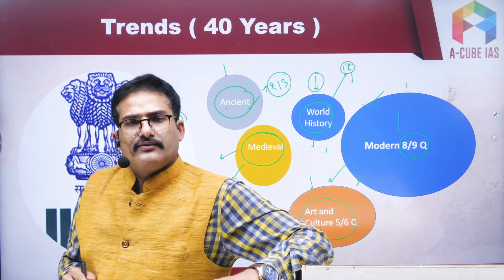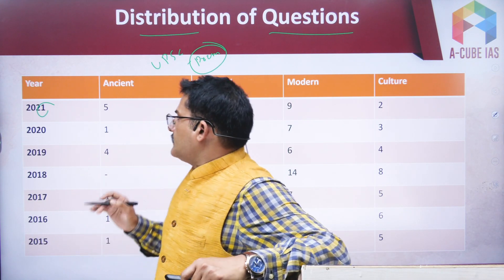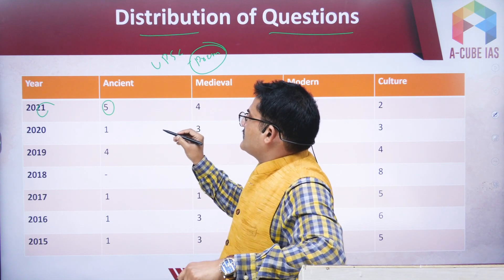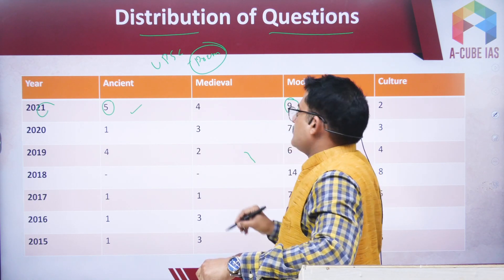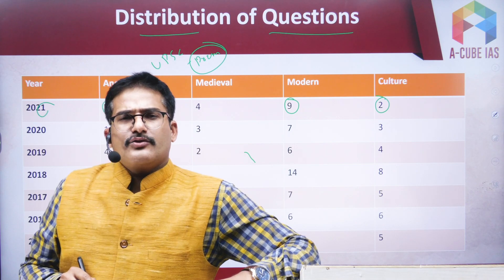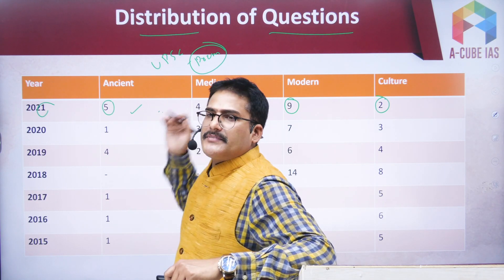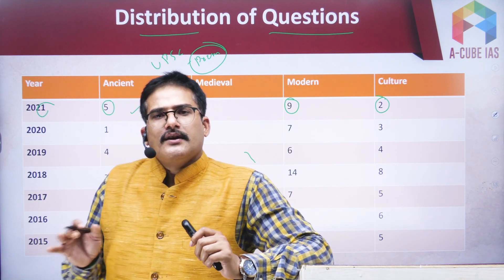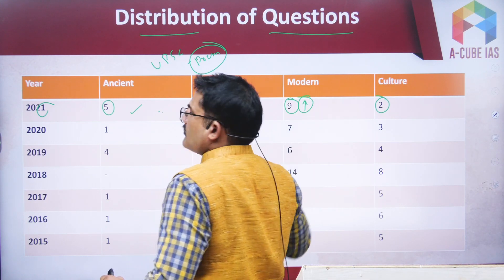Without proof, any claim is just speculation. So let us look at the data. In the 2021 prelims, five questions came from ancient, four from medieval, nine from modern, and two from art and culture. There can be some overlapping in interpretation — for example, few people may consider certain art and culture questions as part of ancient. But conclusively, modern India carries the highest weight.